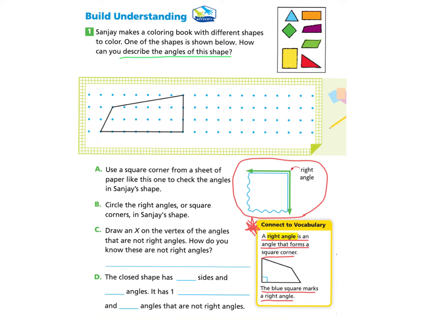There's a really cool way for you to check if there are any right angles in a shape. We're going to look at part A. It tells us to use a square corner from a sheet of paper to check the angles in Sanjay's shape. When you line up the corner of the piece of paper right at that angle, you know that's a right angle. Go ahead and pause the video, take a piece of paper, explore each angle of the polygon, see if it lines up to make a right angle, then come back.